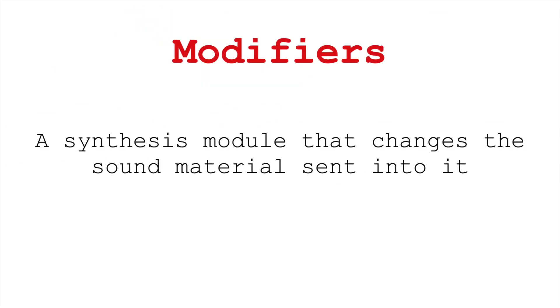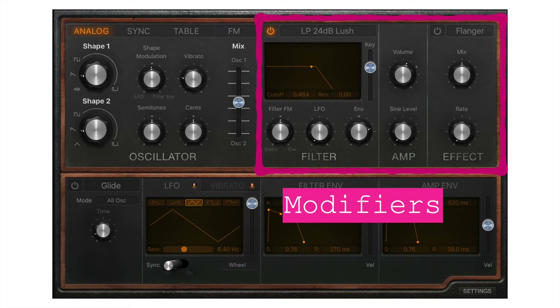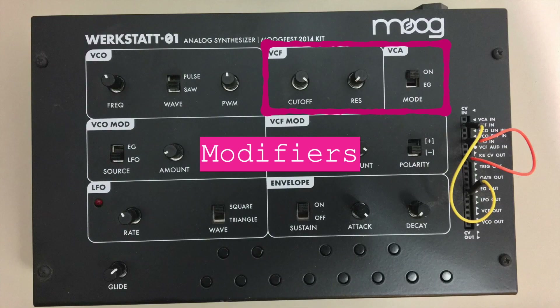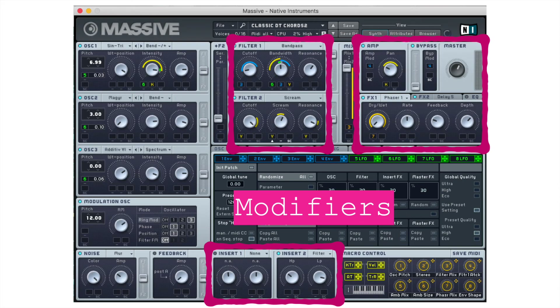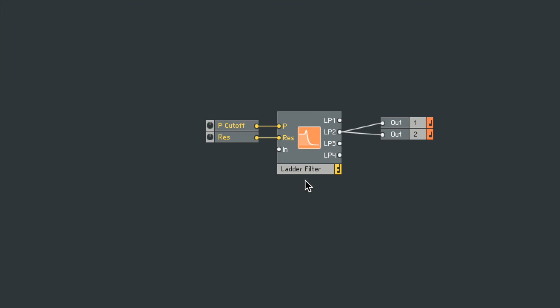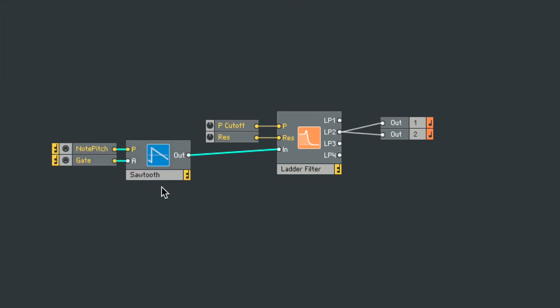Next, modifiers: filters, distortion, delay — anything that takes in an audio signal and puts out a modified audio signal. It's important to understand these categories, because if you step up to a synth you don't understand and you're running your modifiers into the output wondering why you're not getting any sound, it's because you have no generator.